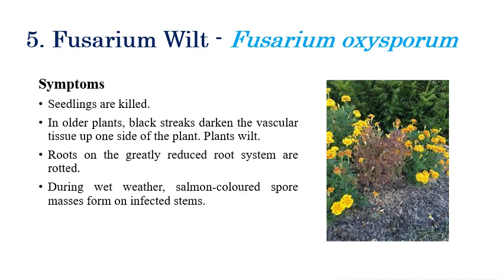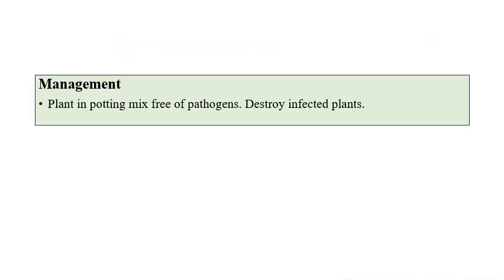Fusarium wilt is caused by Fusarium oxysporum. Complete wilting of plants occurs as the vascular tissue is destroyed, stopping water conduction entirely, which causes the plant to die. Spore masses can also be observed in stem regions when cut open. For management, ensure the potting mixture is free of pathogens, and destroy any infected plants.